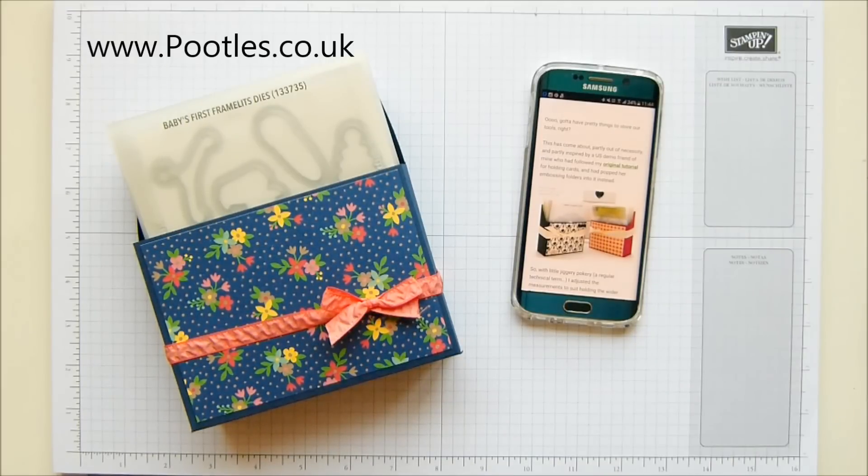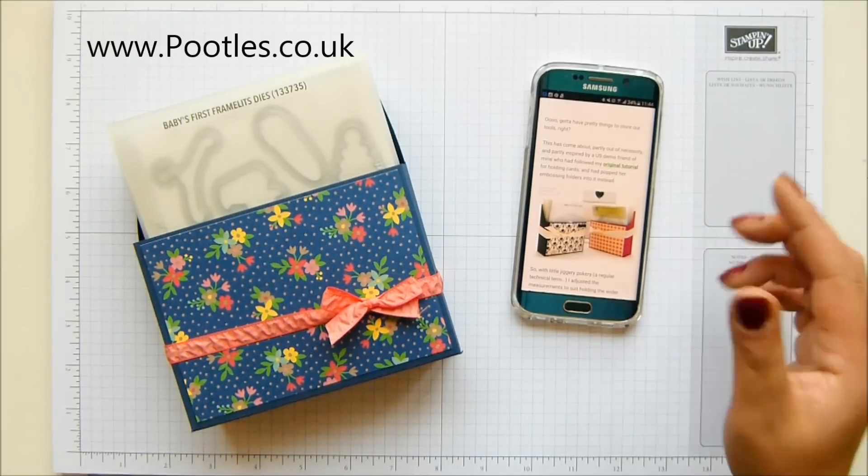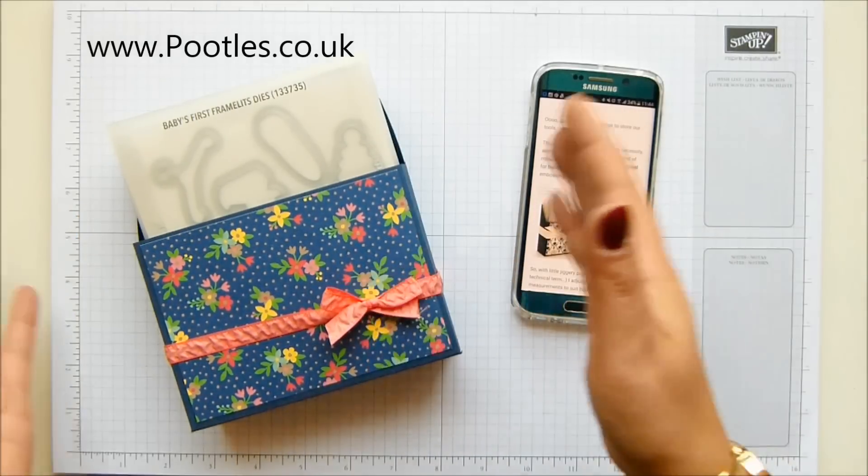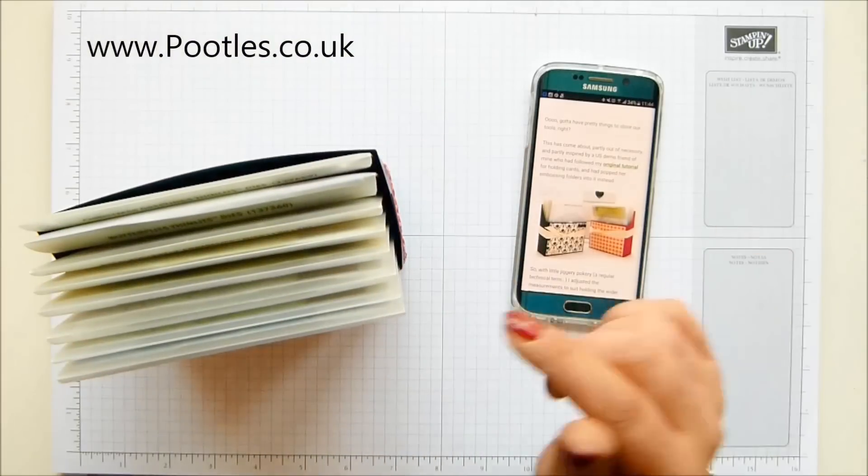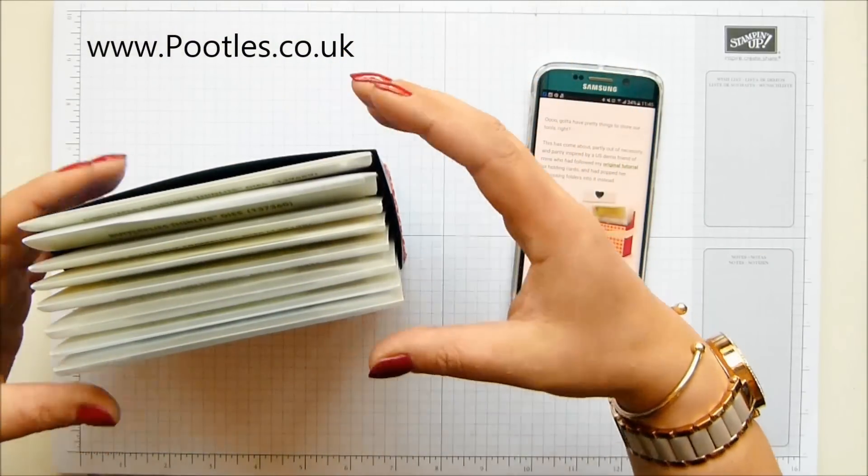Last week I showed you the Extra Large Thinlets holder as a Wayback Wednesday project for 2014. This is one of my earlier ones from 2013 and this was for our regular Thinlets and Framelits. And this box here comfortably holds eight. I would say probably more than that and you're going to bulge too much.